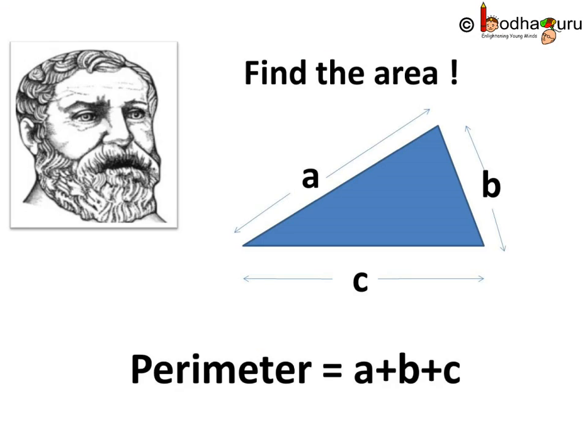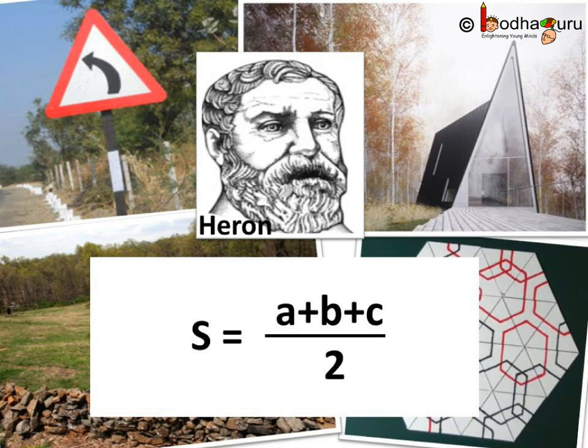Here we see a triangle and A, B, C are the lengths of its three sides. The perimeter of this triangle is A plus B plus C. As we know, the perimeter is nothing but the boundary of a closed figure. Say, S is the semi-perimeter, that is, half of the perimeter of the triangle.